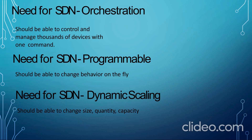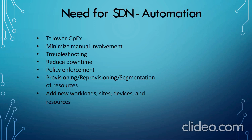We can program devices and change their behavior on the fly. We are also able to change the size, quantity and capacity of devices in our network with ease. The need for SDN automation was to lower operational expenditures and minimize manual involvement in networking. It also helps us troubleshoot errors in our network and reduces a huge amount of downtime. It also enforces a policy or agreement which all companies using IoT devices need to follow. It handles the provisioning, reprovisioning and segmentation of all resources in our IoT network, and new devices, sites and workloads can be added with ease.